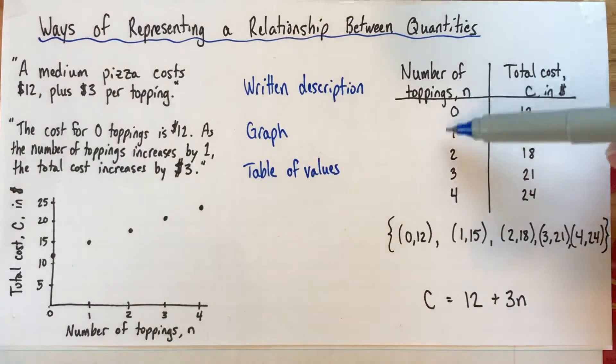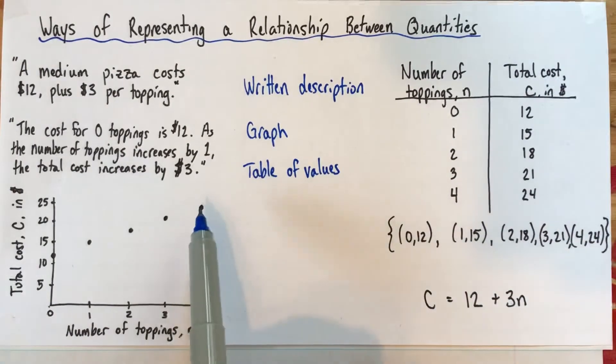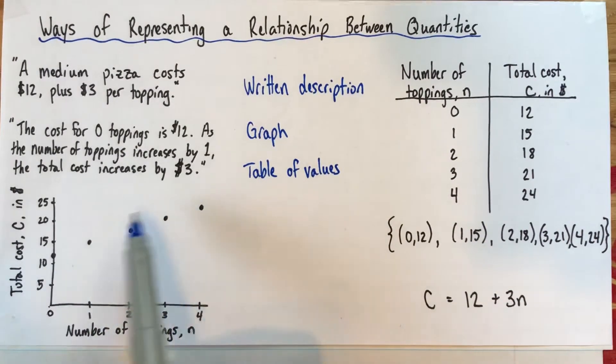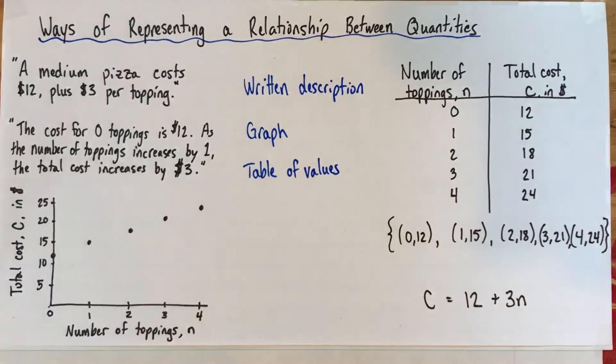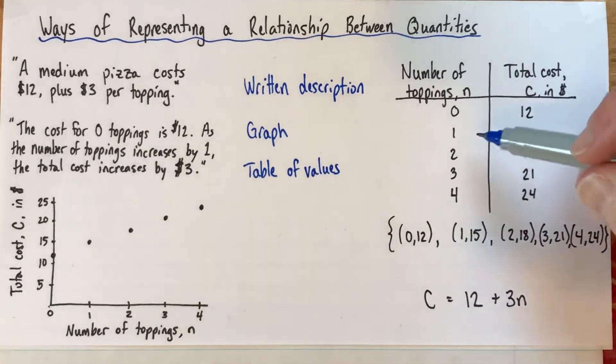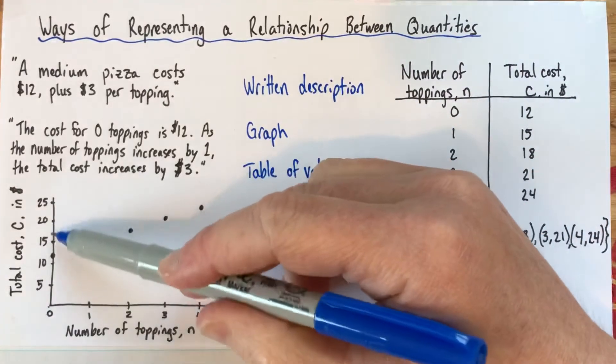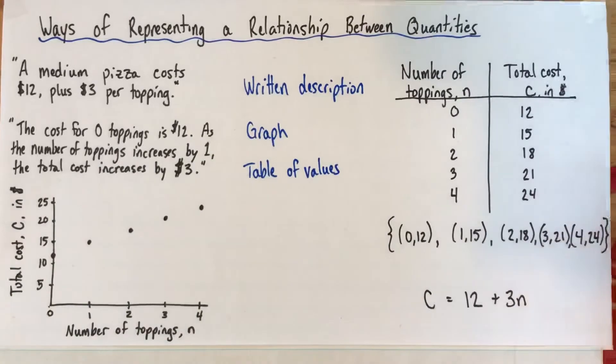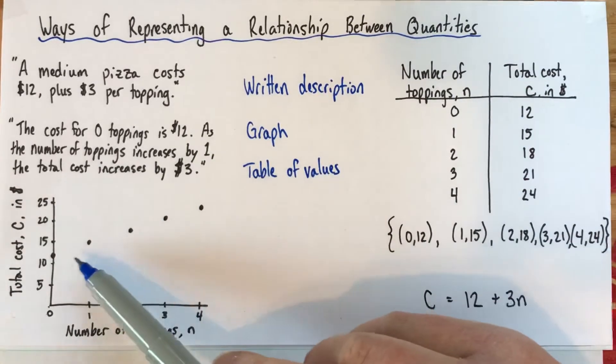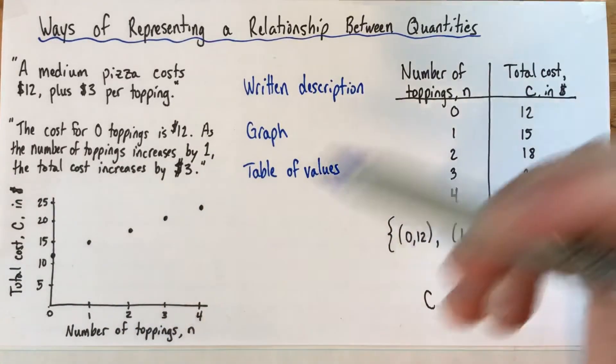So these values in the table are actually exactly the same as the values I chose to put on the graph. And I think it shows you different things. This really shows you more precisely how much does it cost for two toppings, where here you can kind of tell it was between 15 and 20, you didn't know exactly how much it was. But here it really gives you a nice idea of the pattern of how things are increasing.